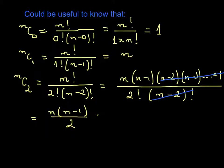You would be expected to know the values of n combination 0, which is 1, n combination 1, which is n, and n combination 2, which is n(n-1) over 2. You don't need to learn these by heart, but you should be able to derive them.